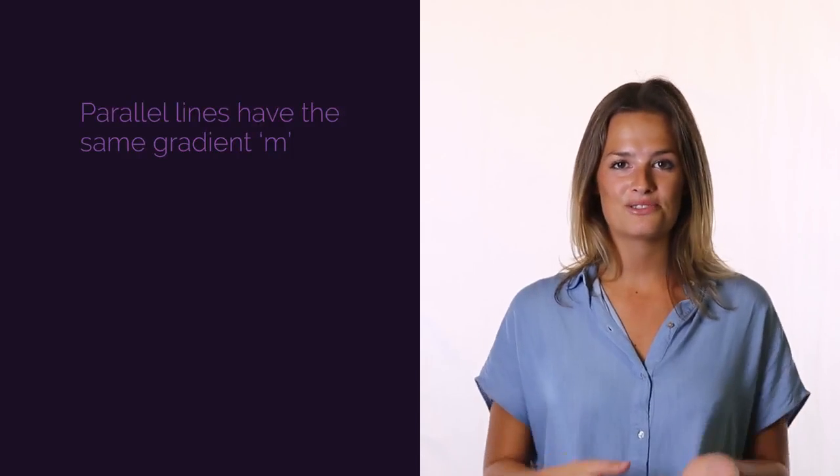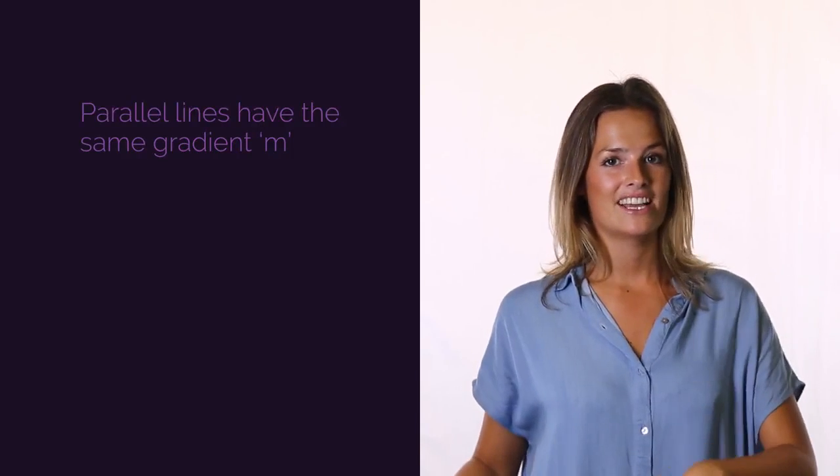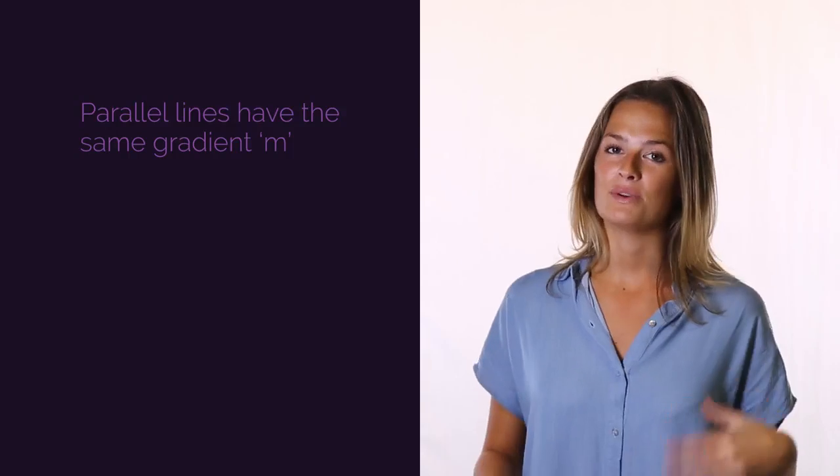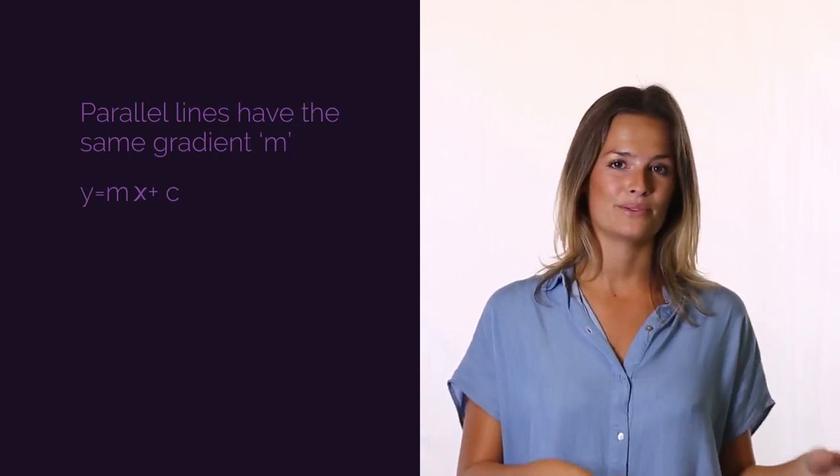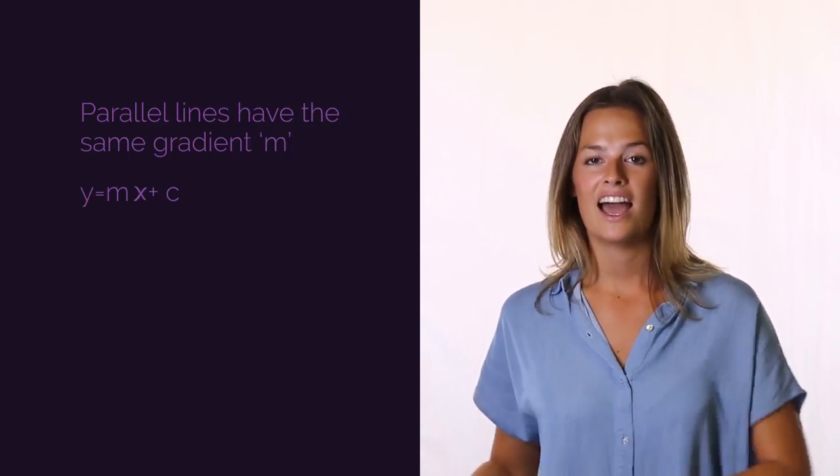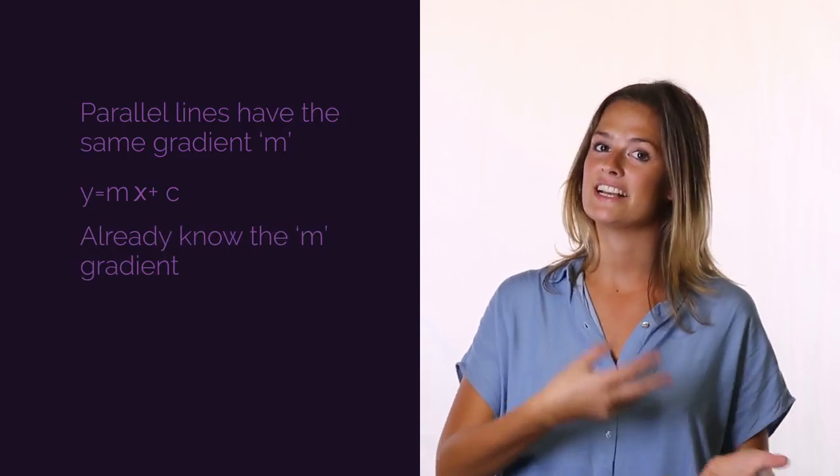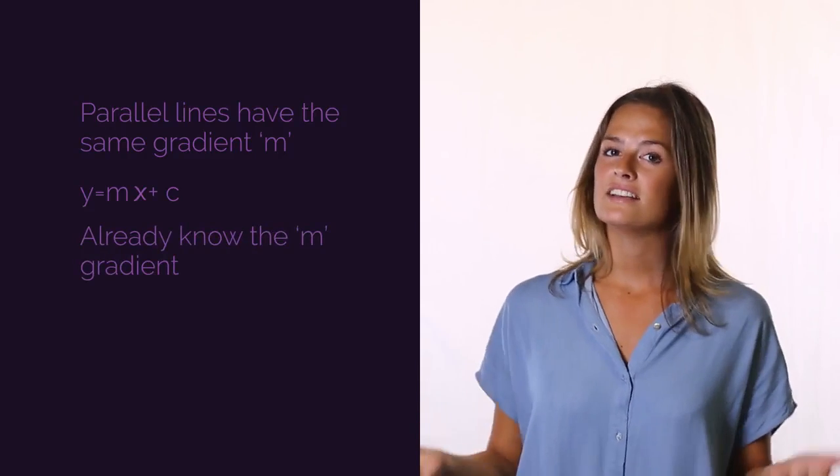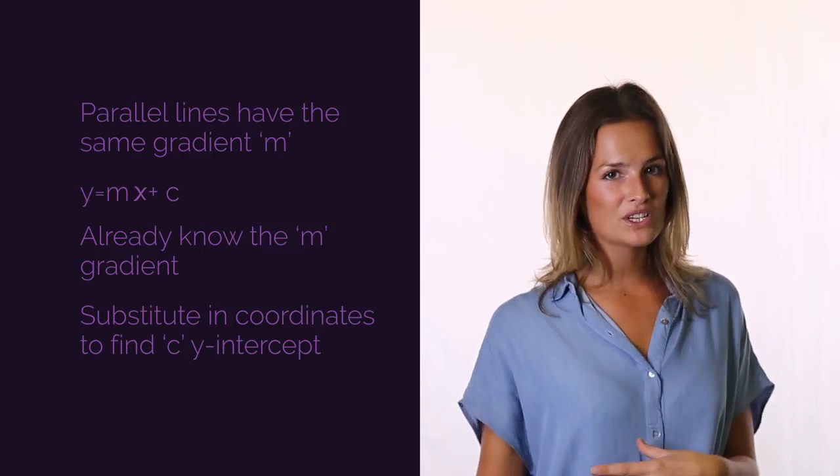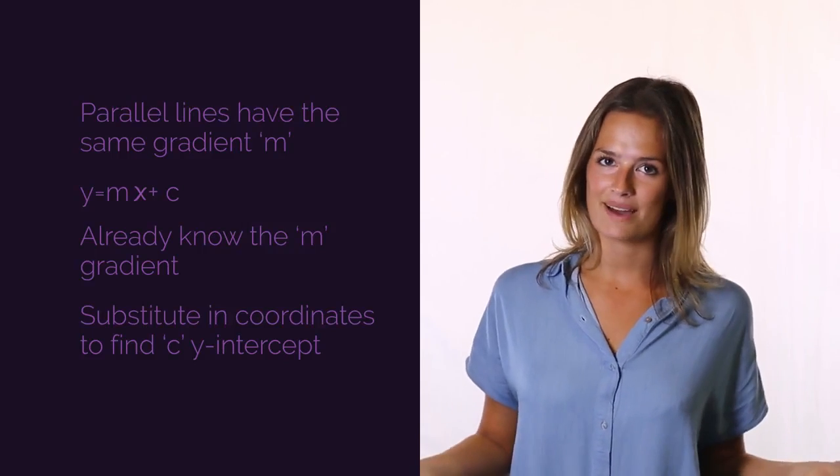So from this video, you should now know that parallel lines always have the same gradient. So to find the equation of them, we just use the y equals mx plus c equation, and we already know the gradient as it's the same for parallel lines. So that means we just have to substitute in a set of coordinates to find the y-intercept c. See, that wasn't too difficult, was it?